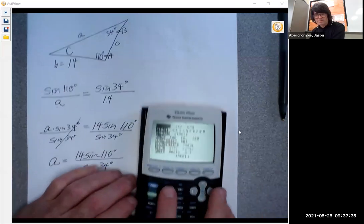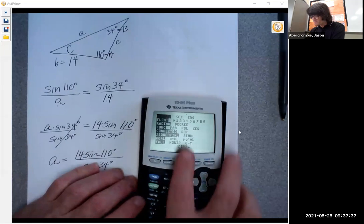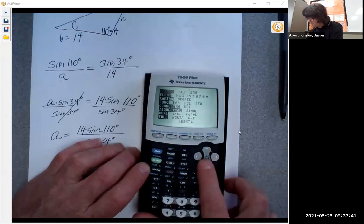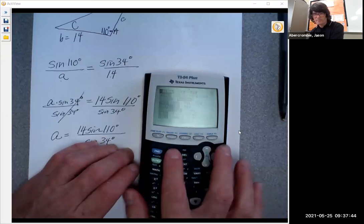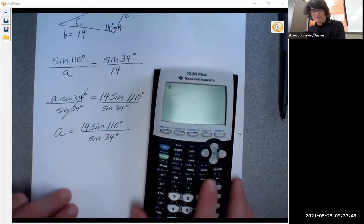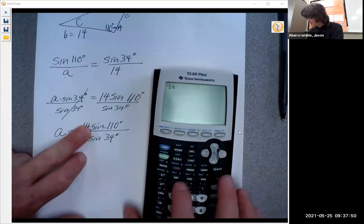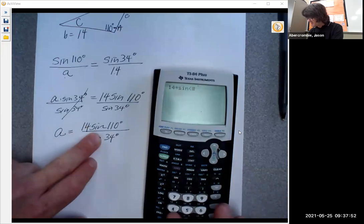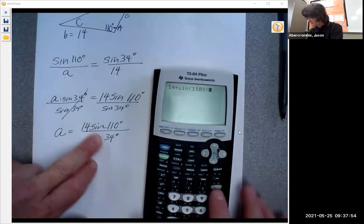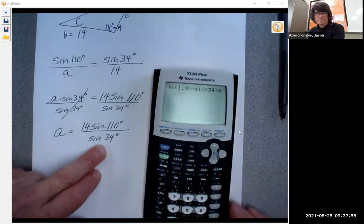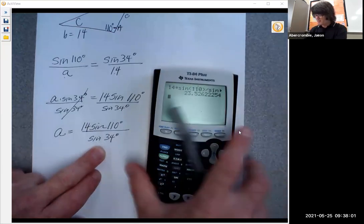So I'm going to go to mode first of all, make sure I'm in degrees. Degrees is right there. So I'm going to just arrow over and get in degrees. Then we can quit. And now I'm going to do 14 times sine 110 divided by sine 34. So 23.5 is a.